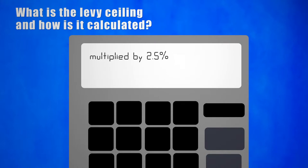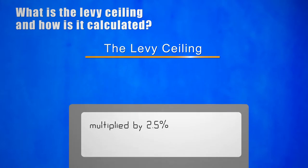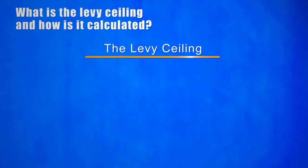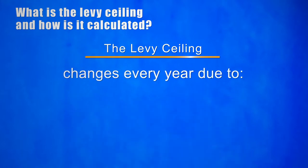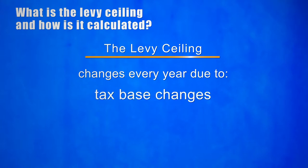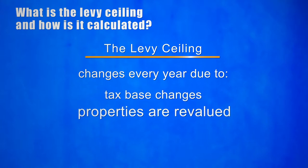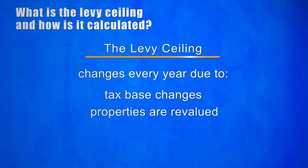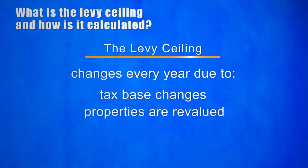The levy ceiling is a dynamic figure. That simply means that it changes every year because the valuation of the tax base changes as properties are added to or removed from the tax rolls. In addition, properties are revalued to reflect current market value on a periodic basis.